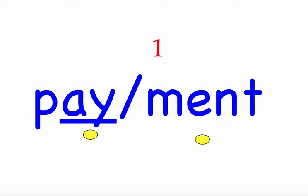Now we mark 'payment.' Step one: look for vowel teams or consonant teams. We have one vowel team, A-Y. Step two: identify vowel sounds — two vowel sounds, so we have a two-syllable word. Apply syllable rule one: one consonant between A-Y and E. In the first syllable, A-Y represents the long A sound according to vowel group four. In the second syllable, E is followed by a consonant, so it represents its short sound.